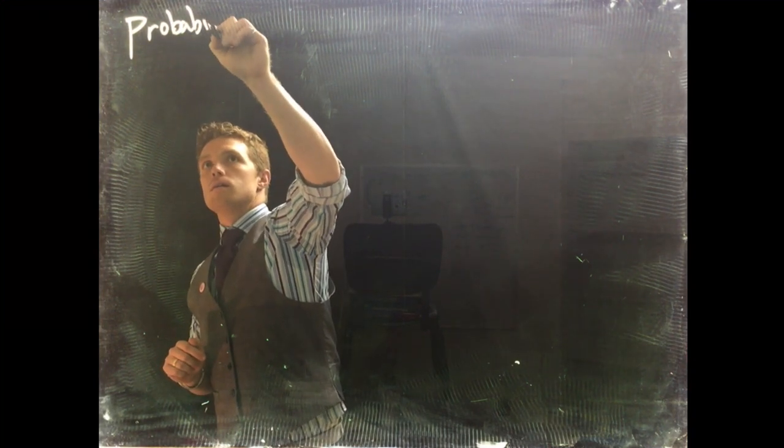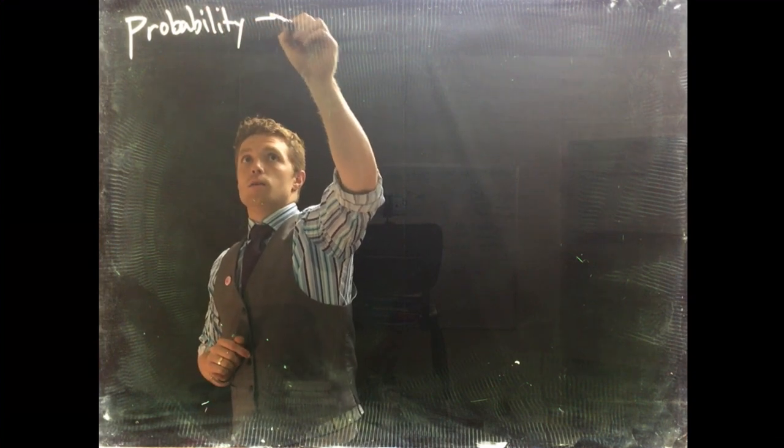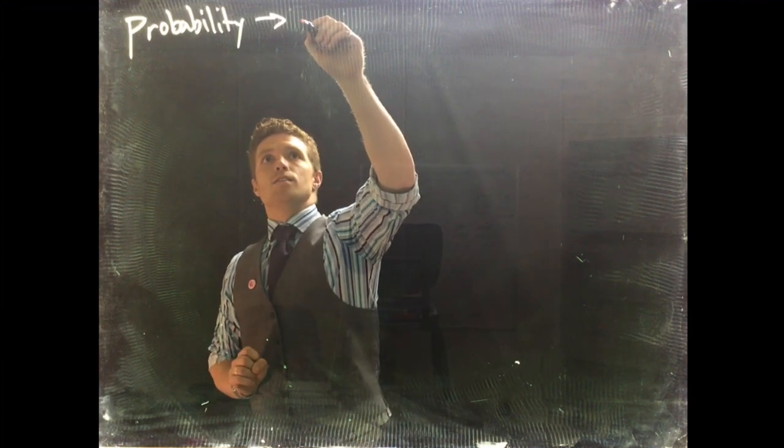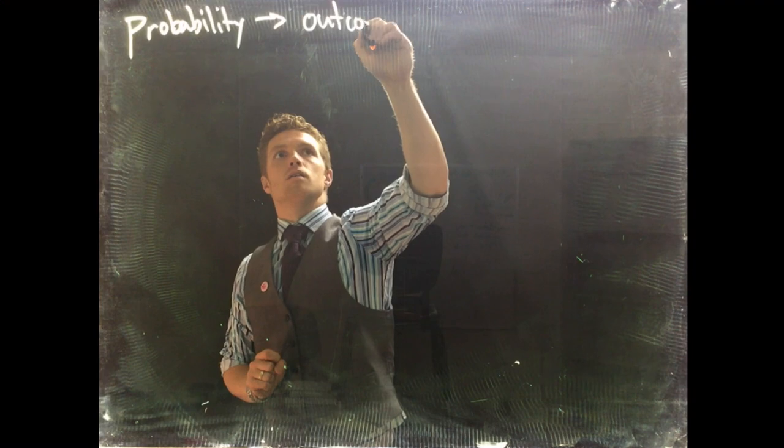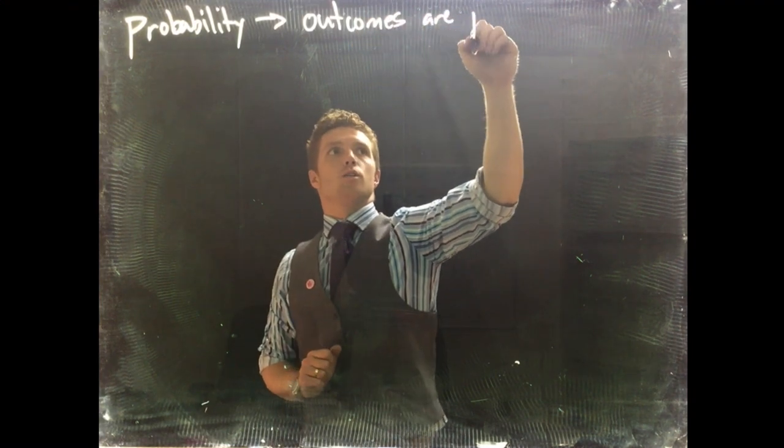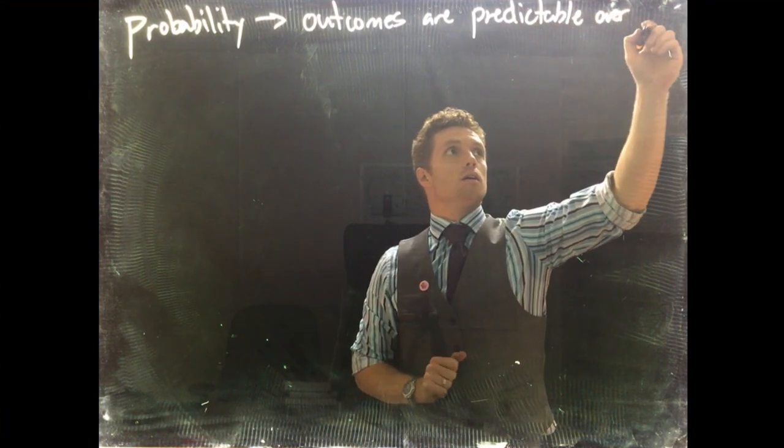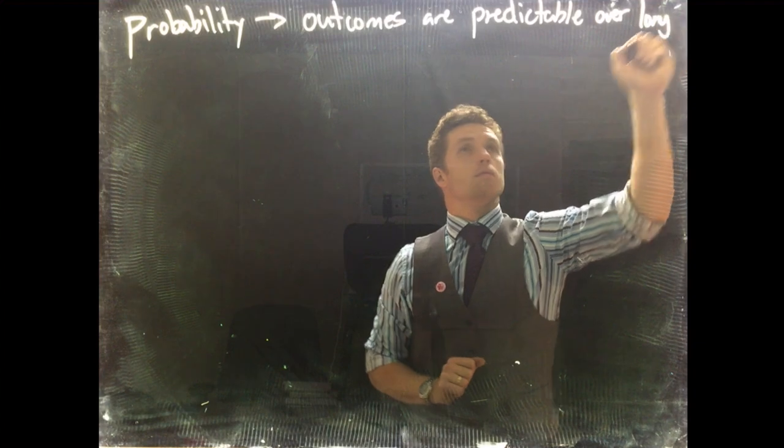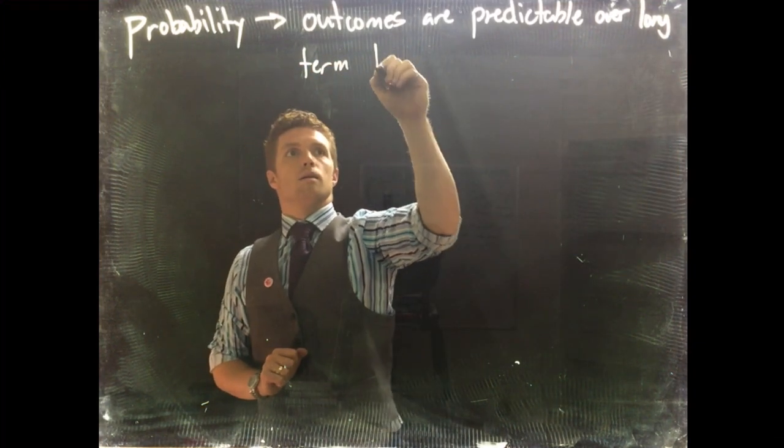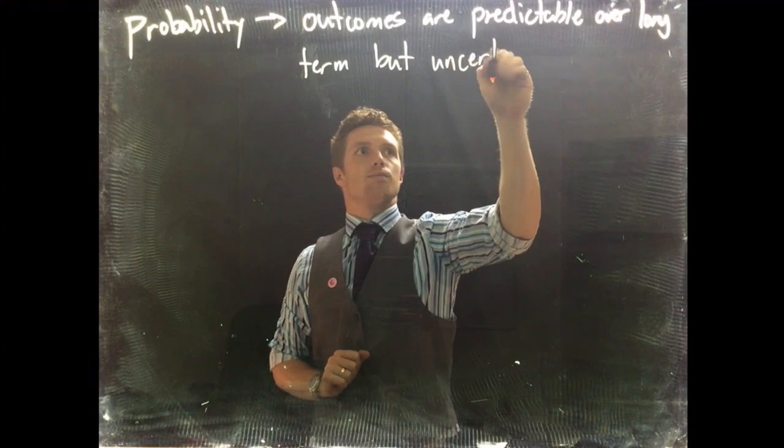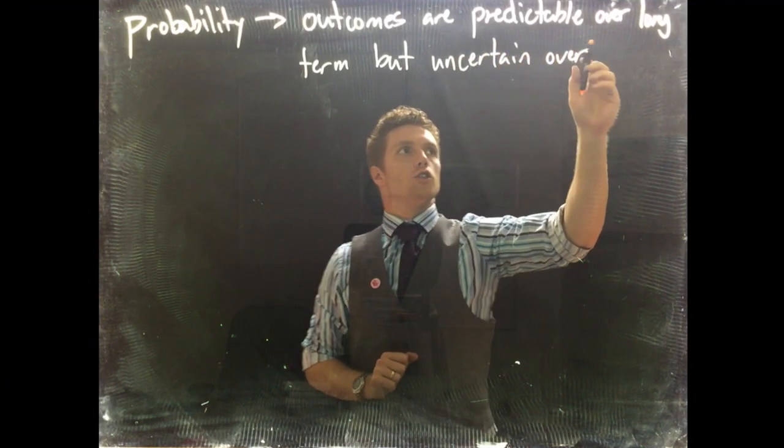Okay, so let's talk about some other things about probability. We also need to remember one of the properties about probability. One fundamental property about probability is that outcomes are predictable over the long term but uncertain over the short term.